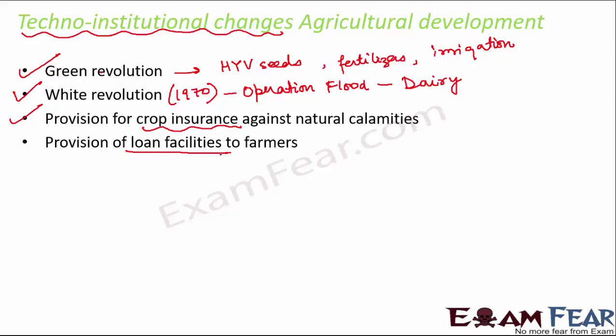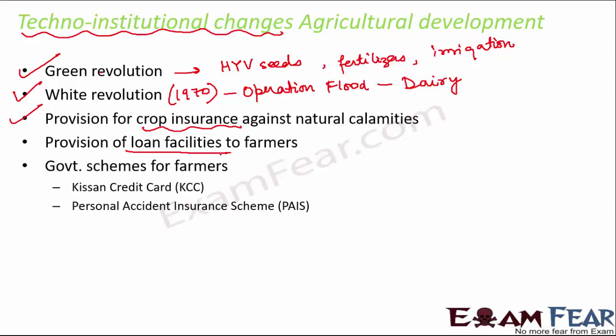Crop insurance was introduced, along with provision of loan facilities to farmers. India being an agricultural country, agricultural development means thinking about farmers' development, since they are directly involved in agriculture. If a farmer is poor and doesn't have money, he cannot make use of better techniques to increase crop productivity. For that purpose, many Grameen banks and cooperative banks were formed to give interest-free or very low interest rate loans to farmers so they can buy agricultural inputs. Government schemes were also introduced for farmers' benefit, one being the Kisan Credit Card — KCC.